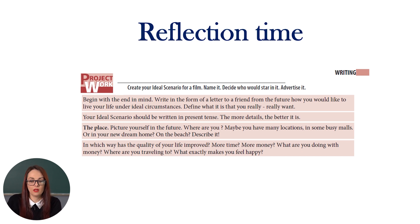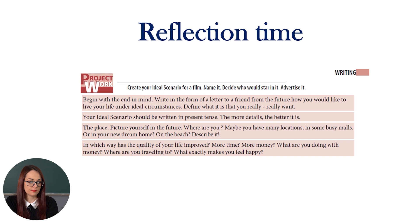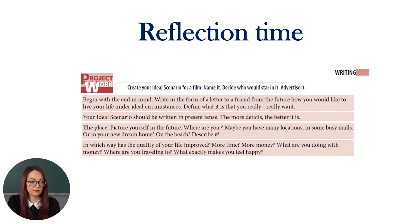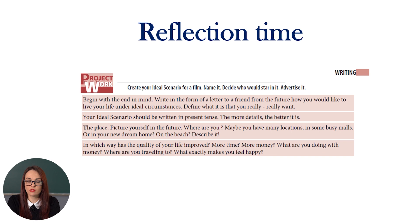Now it is reflection time. Imagine yourself in the future — you have become a very successful person and have everything you once desired as a teen. Create your ideal scenario of a film, name it, and decide who would star in it. Advertise it. Begin with the end in mind. Write in the form of a letter to a friend from the future about how you would like to live your life under ideal circumstances. Define what it is that you really, really want. Your ideal scenario should be written in present tense — the more details, the better. Picture yourself in the future: where are you? Maybe in busy malls, your new dream home, or on the beach. Describe it. In which way has the quality of your life improved? More time, more money — what are you doing with money? Where are you traveling to? What exactly makes you feel happy? Good luck!